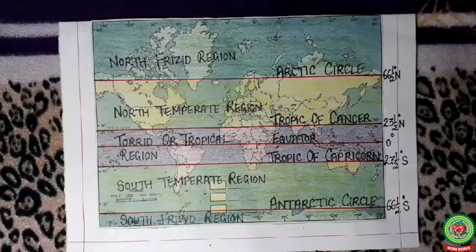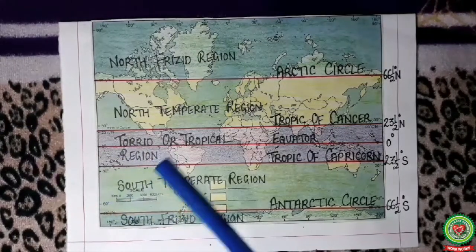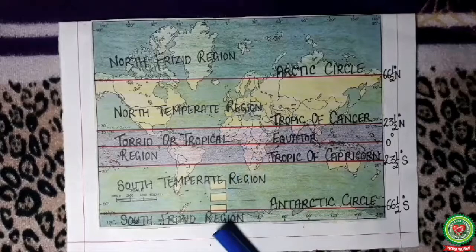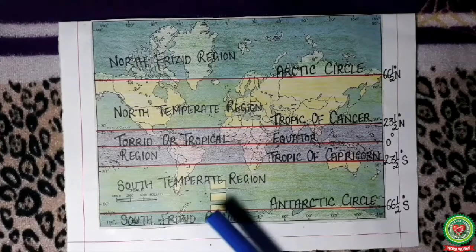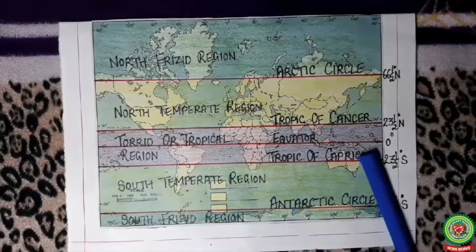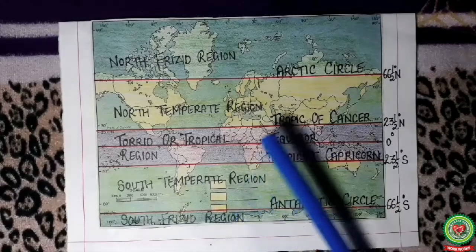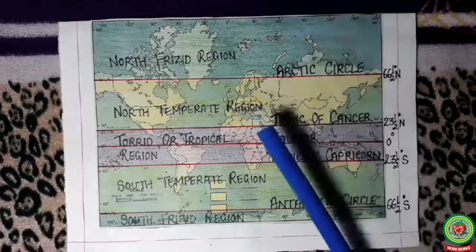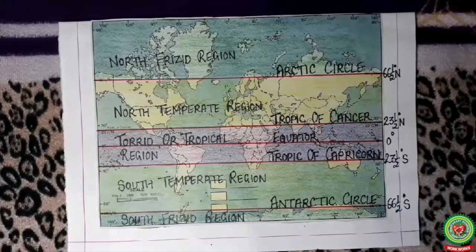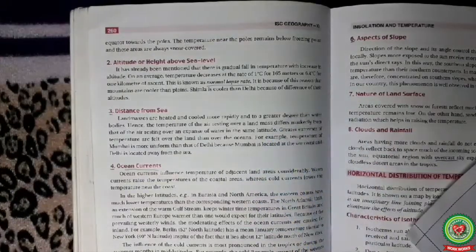The rays of the sun fall directly on the torrid zone, that is the area along the equator, whereas polar areas receive slanting rays of the sun. The temperature along the equator in the torrid zone remains about 30 degrees Celsius, whereas in the frigid zone around the poles the temperature is below freezing point. So as we move away from the equator to the poles, the temperature decreases.